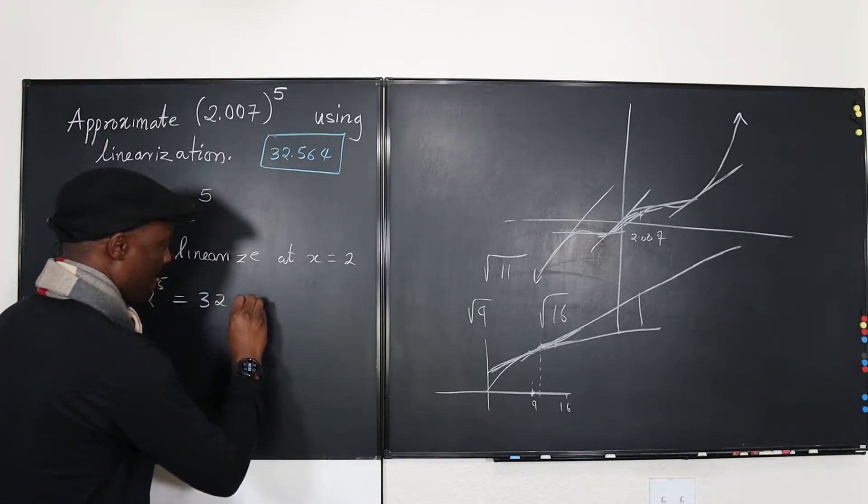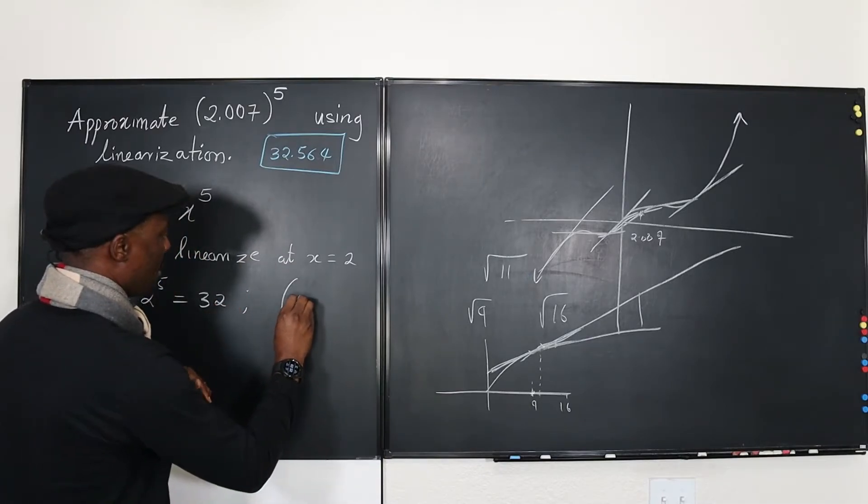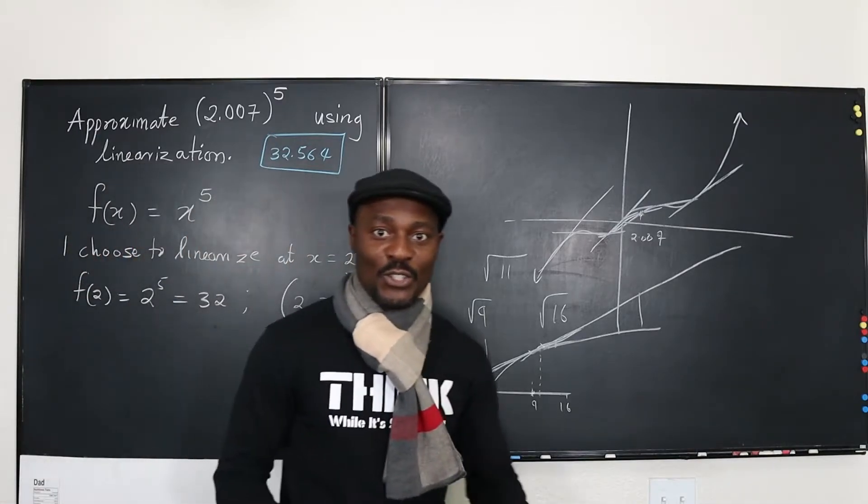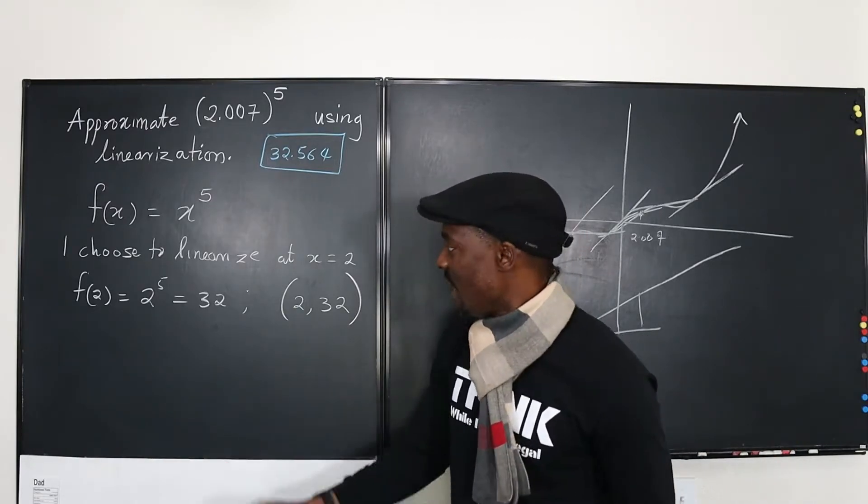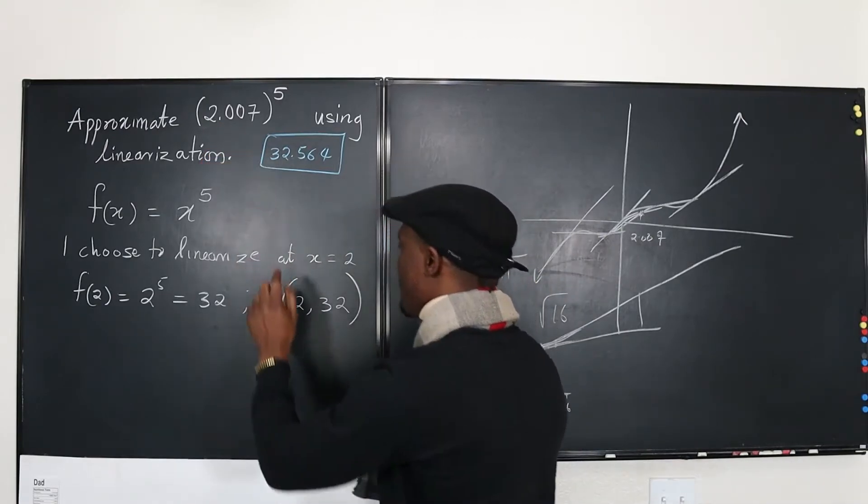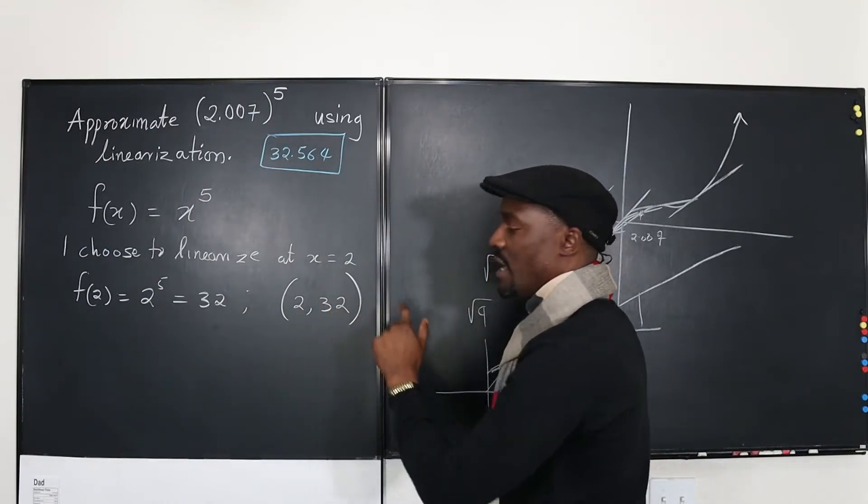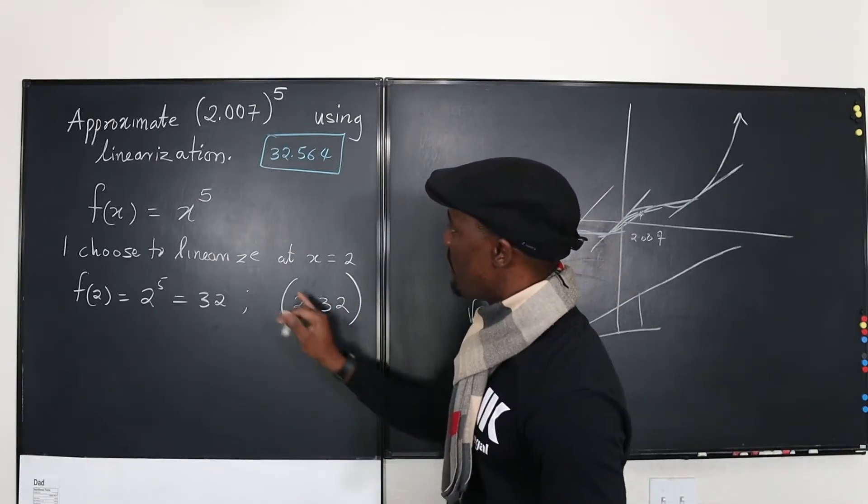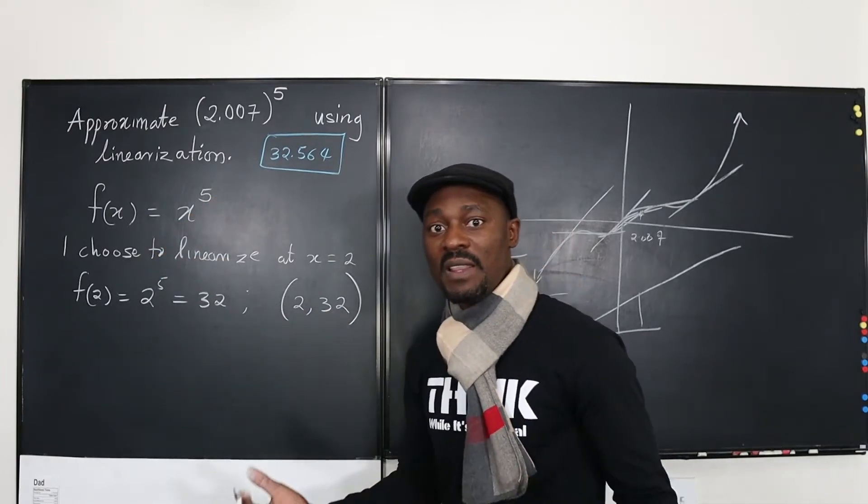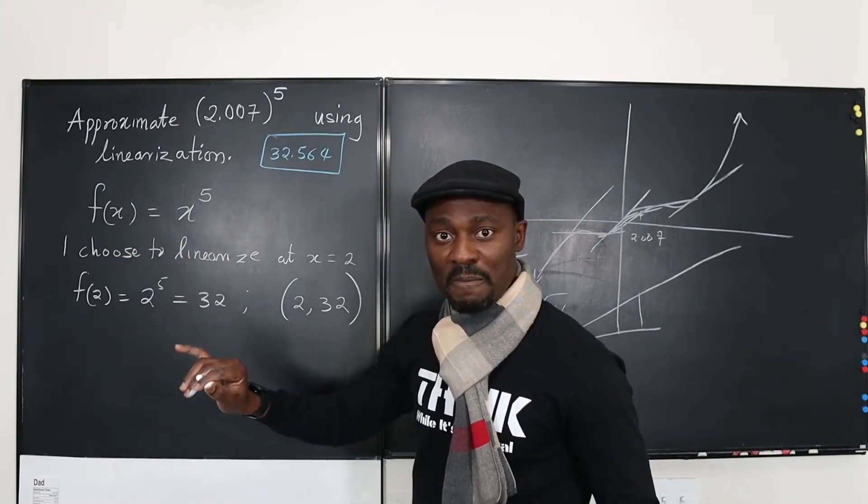So the point will be the point 2, 32. So these are the two important things that you need. So usually when you're asked to find the equation to a tangent line, you're given a point. Now you have decided what the point is. It's going to be the closest point to this that you can deal with. And now, you know, the point is the point where x is 2 and y is 32, which is true. If x is 2, then 2 to the power of 5 is going to be 32. And that's it. So let's find the equation of the tangent line, which we start by finding the derivative of the function.